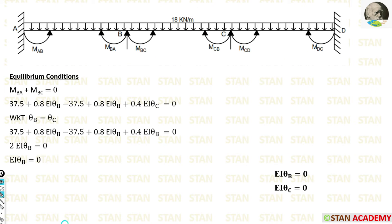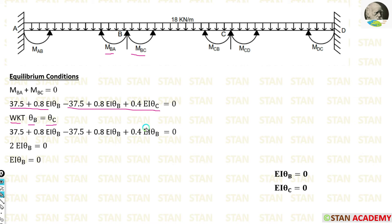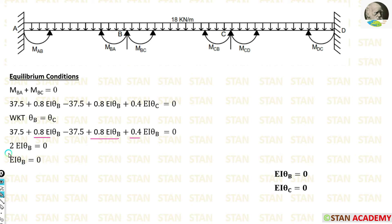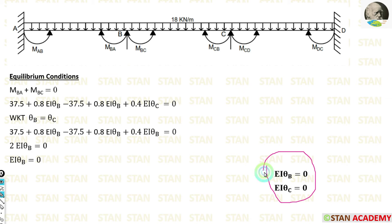Now we apply the equilibrium condition. We need only one condition: at B, the summation of moments is zero — MBA + MBC = 0. Substituting from the slope deflection equations, and replacing θC with θB (since θB = θC), the terms −37.5 and +37.5 cancel. Adding the 0.8EIθB, 0.8EIθB, and 0.4EIθB terms gives 2EIθB = 0. Therefore EIθB = 0 and EIθC = 0.